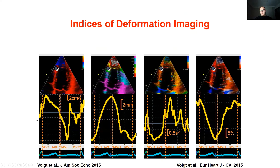These conventional methods concentrate mainly on radial function and ignore longitudinal function, which in most cardiac pathologies is altered before changes occur in radial indices. Therefore, deformation imaging has been helping us to quantify left ventricular function and has been used for many cardiac pathologies.